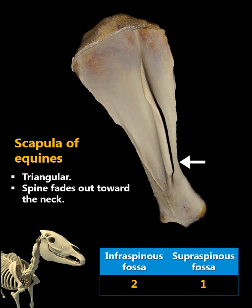As you see, the scapula of horse is triangular in shape. The size of the infra-spinous fossa is two times that of the supra-spinous fossa, and the spine fades out towards the neck.